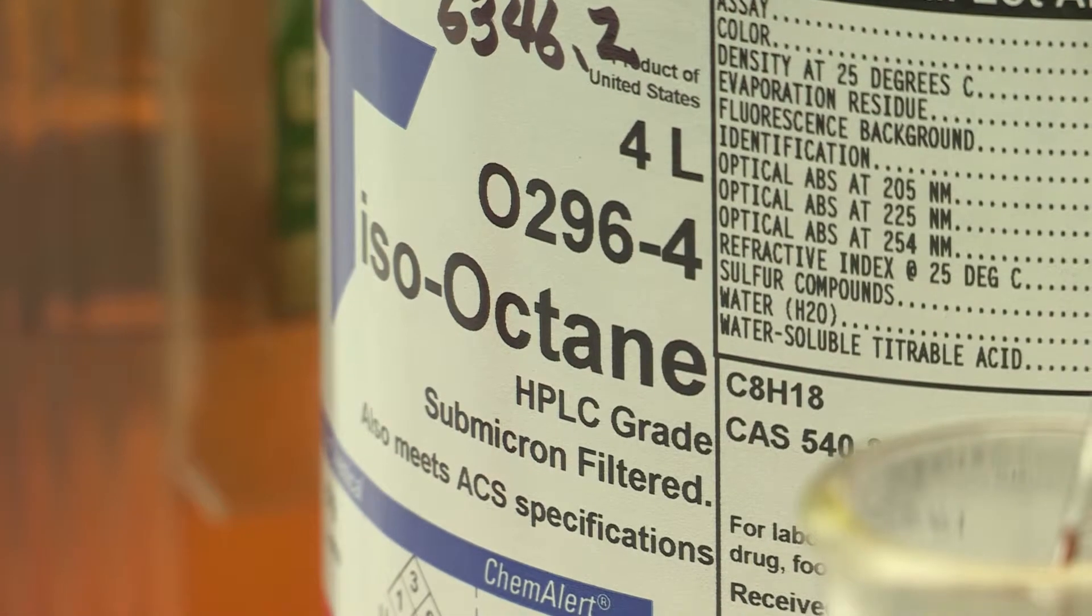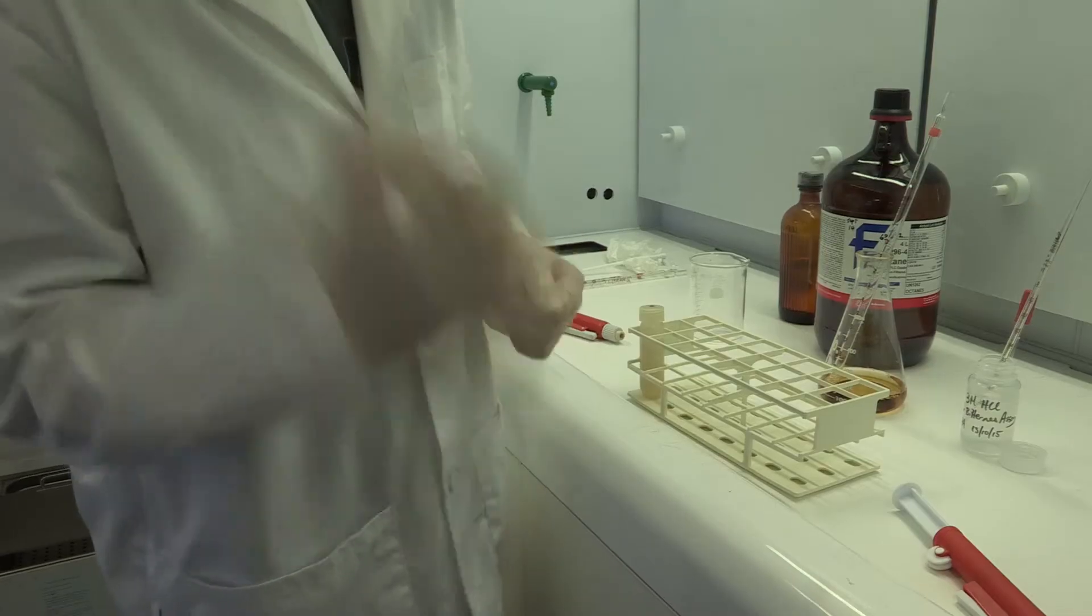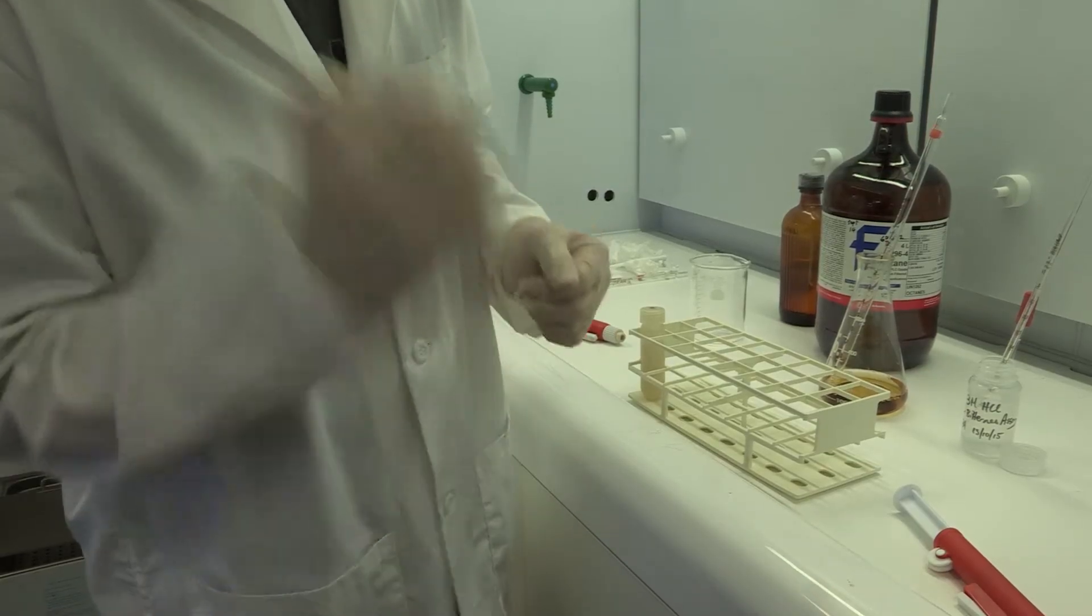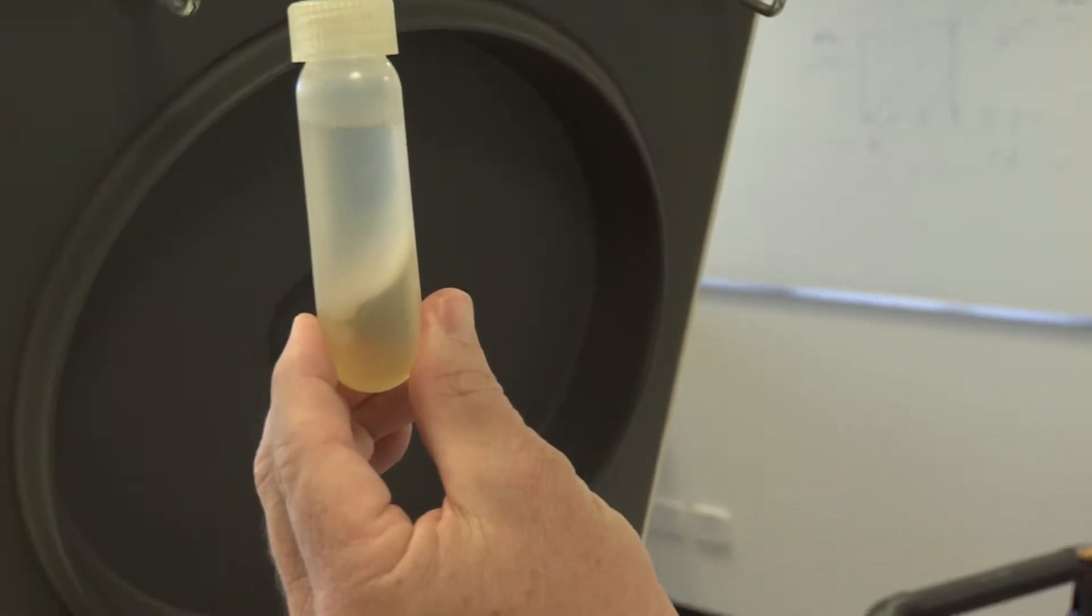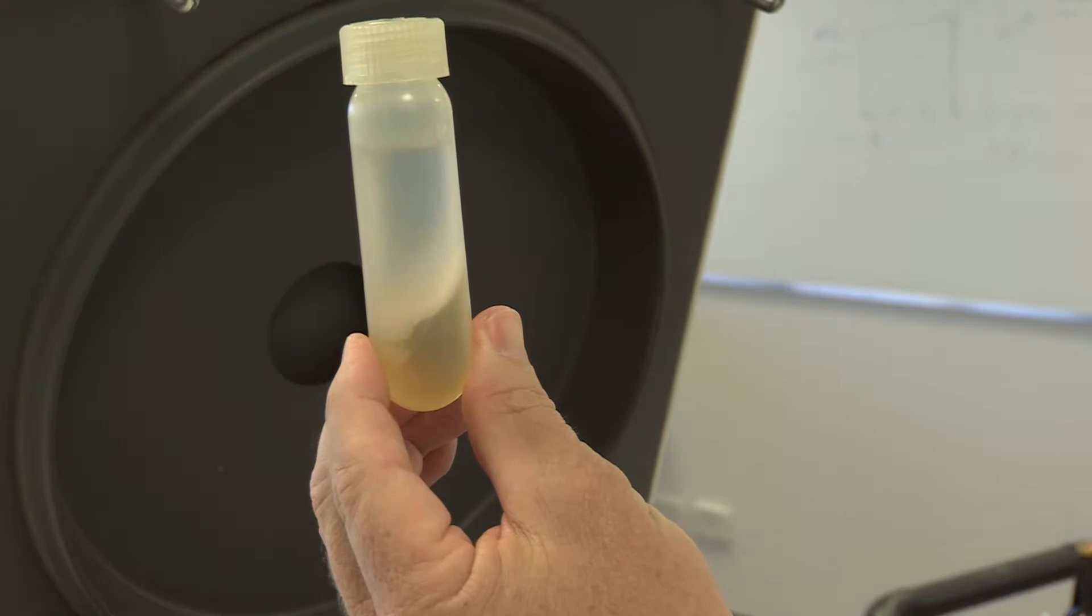Then 20ml of iso-octane is added and the tube vigorously shaken. The iso-alpha acids are more soluble in iso-octane than the aqueous phase, so they're extracted into the iso-octane.